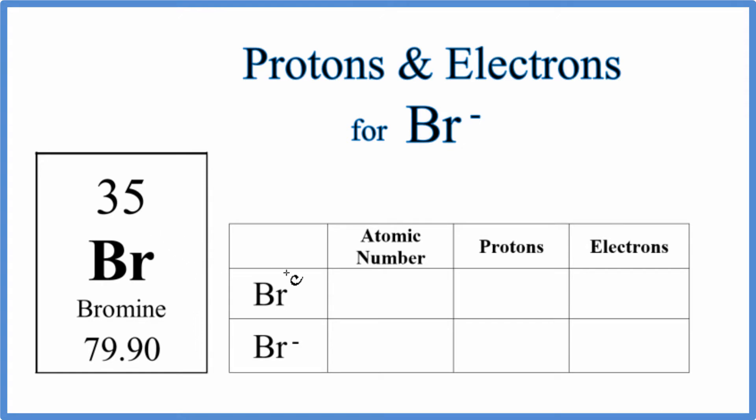First, let's find the atomic number, protons, and electrons for bromine, then do the bromide ion. This 35 is the atomic number, which tells us the number of protons. So we have an atomic number of 35 for the neutral atom Br, and the protons will be 35 as well.